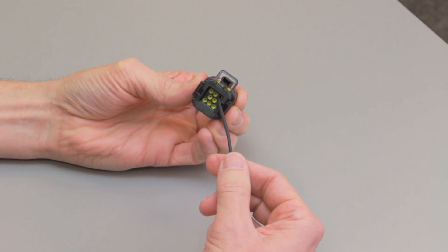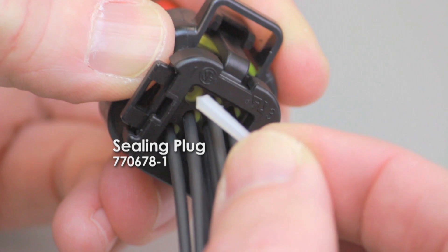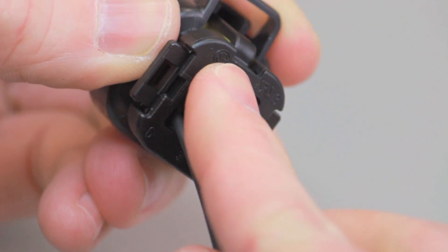Repeat this process until all of the cavities are filled. If an empty contact cavity is accidentally pierced, insert sealing plug 770678-1, large end first, into the contact cavity as far as it will go to reseal it.